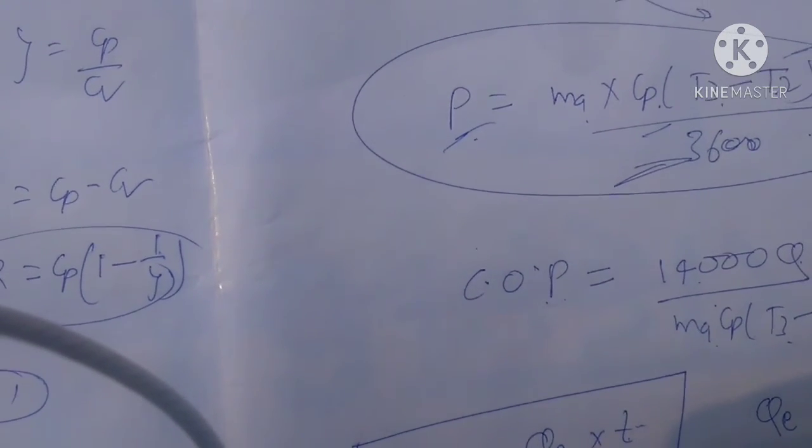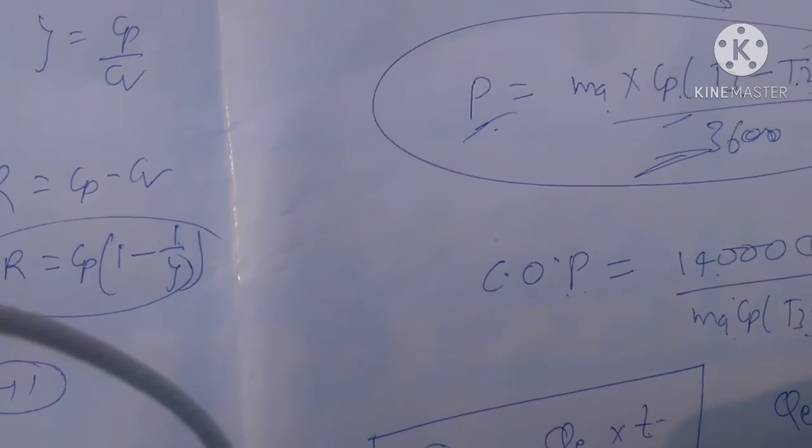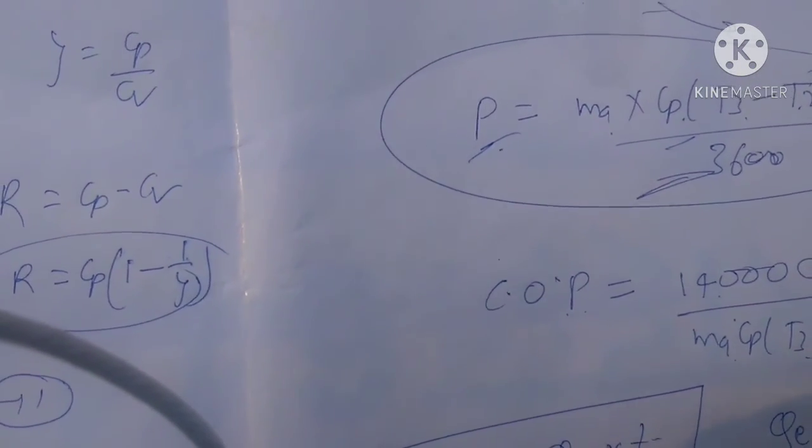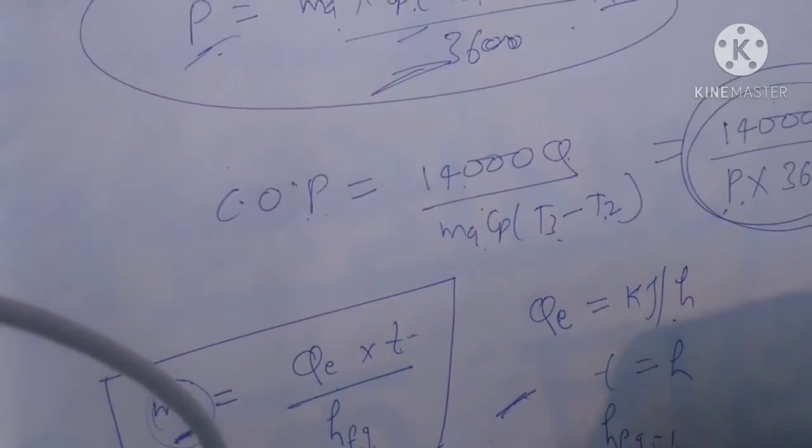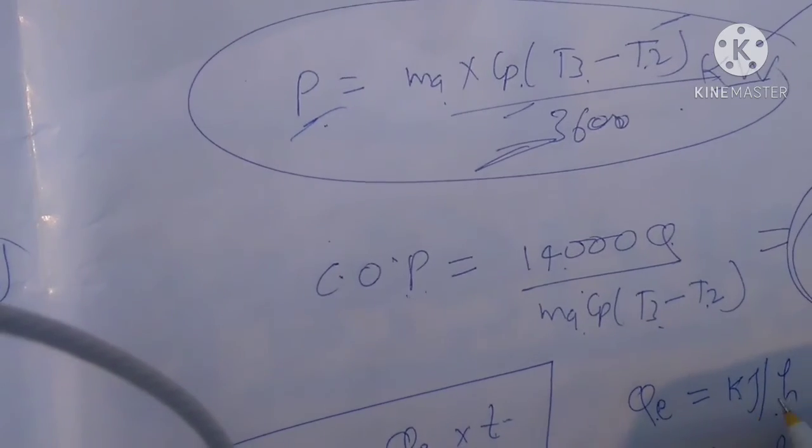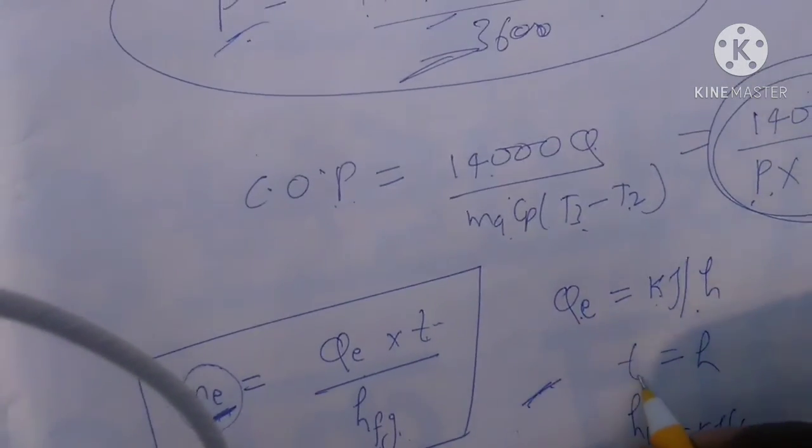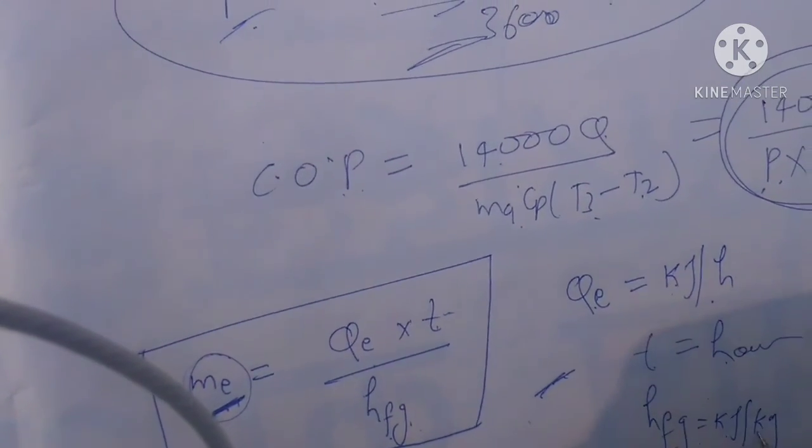T is taken as flight time in hours, and HFG is latent heat of evaporation, taken as kJ per kg. QE is taken as kJ per hour, t flight time taken as hours, and HFG as kJ per kg.